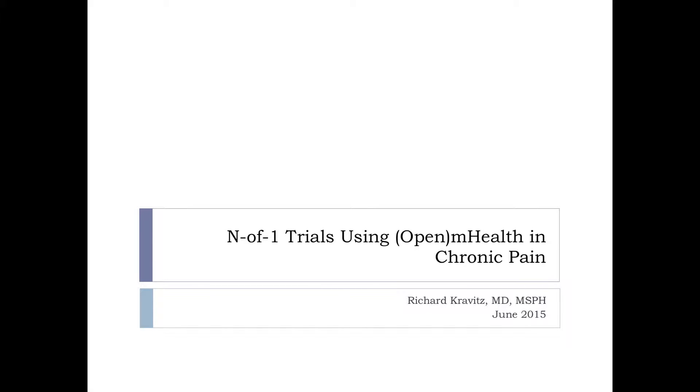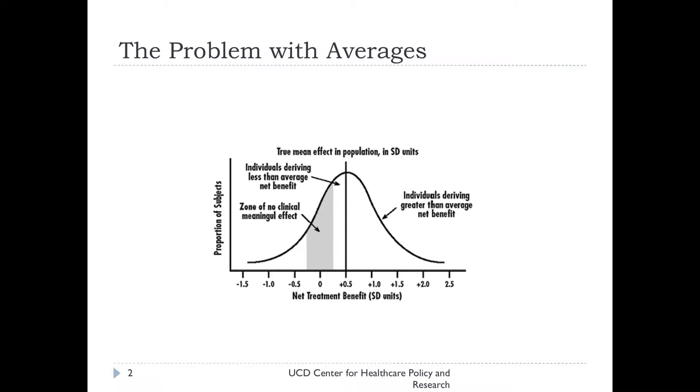The problem I wanted to address in clinical science is that, to the extent that anything physicians do is evidence-based, it's mostly derived from randomized control trials, which are big population-based studies where large groups of people are assigned at random to one treatment or another. These trials are really effective for generating average effects — the effects of treatment for the average person. But the problem is that not everyone is average; in fact, most of us aren't. Some of us will respond better than average to a particular treatment, and some will respond worse — sometimes way worse.